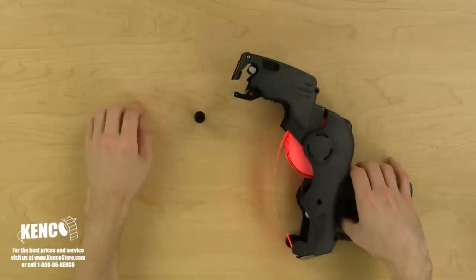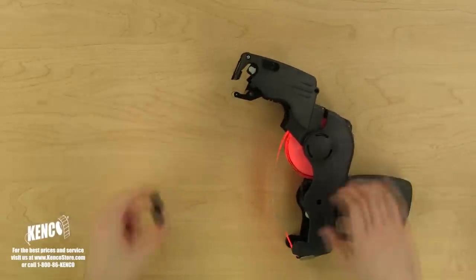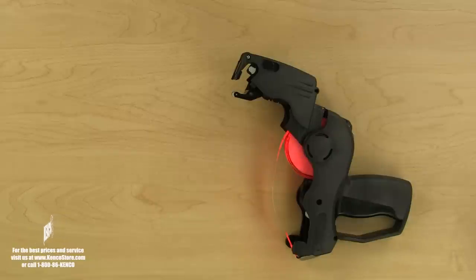Use only the white button to eject the ink roller, as pulling on the ink roller itself will damage the ink roller locking and ejection mechanism.